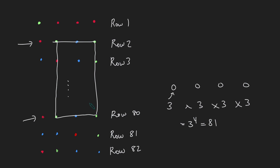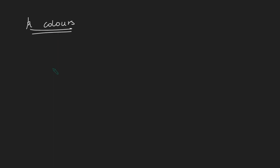Now let's prove the generalisation. The idea is similar, but we tweak the size of the rectangle. With K colours, instead of a 4 by 82 rectangle, we use K plus one columns and K^(K+1) + 1 rows. The plus one in the row count is what makes the pigeonhole principle work.